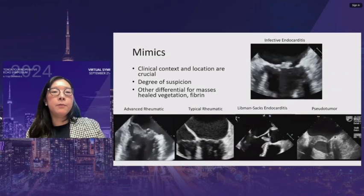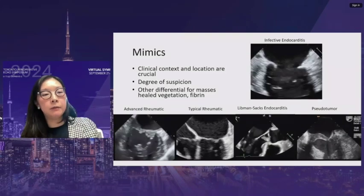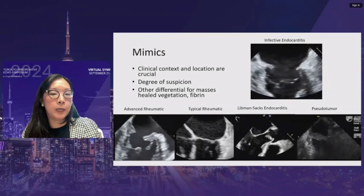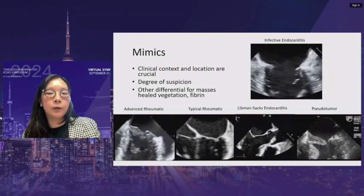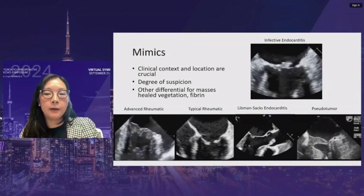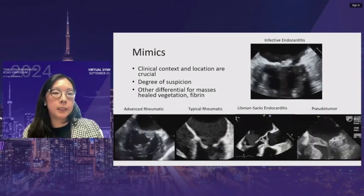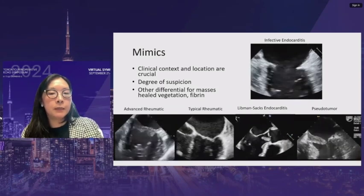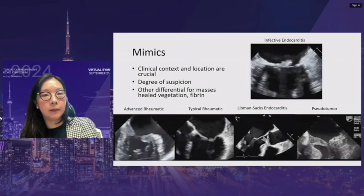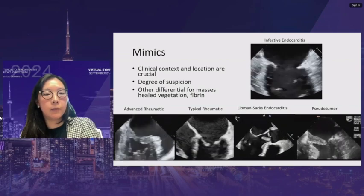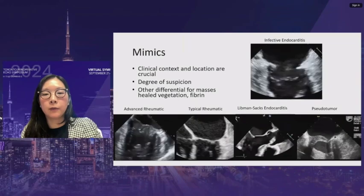There are many mimics of vegetations. Examples from the mitral valve include advanced rheumatic disease, typical rheumatic disease, Libman-Sacks endocarditis on the aortic valve — which can appear very similar to an infected vegetation — and a pseudotumor. Other differentials include healed vegetations, fibrin on intracardiac devices, and various masses. Clinical context, location, and degree of suspicion for infective endocarditis are all very important for determining the diagnosis.